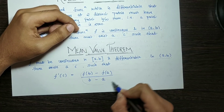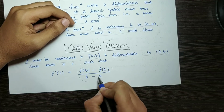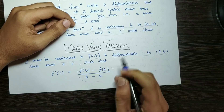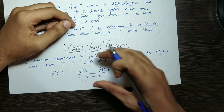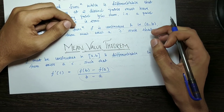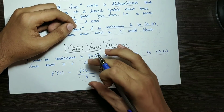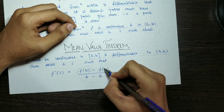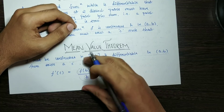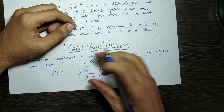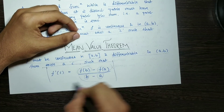That expression — f(b) minus f(a) divided by b minus a — is the same form as (y2 minus y1) divided by (x2 minus x1), which is the slope formula. It is the point-slope formula for a straight line. So there exists one point c such that the derivative at c equals the slope between the two endpoints. This is the Mean Value Theorem.